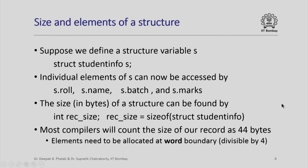Unfortunately, most compilers will count the size of our record as 44 bytes, because elements need to be allocated at what is called a word boundary. That means every new allocation must begin at a byte whose number is divisible by 4. That is why, although s.name is only 30 bytes, 2 bytes will be added as padding bytes and s.batch will be allocated at the next word boundary.